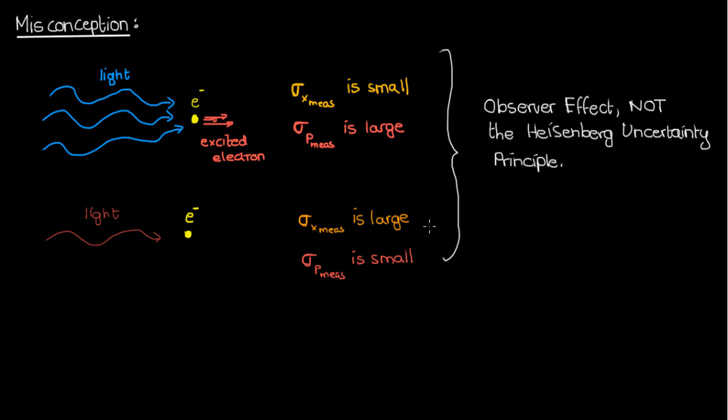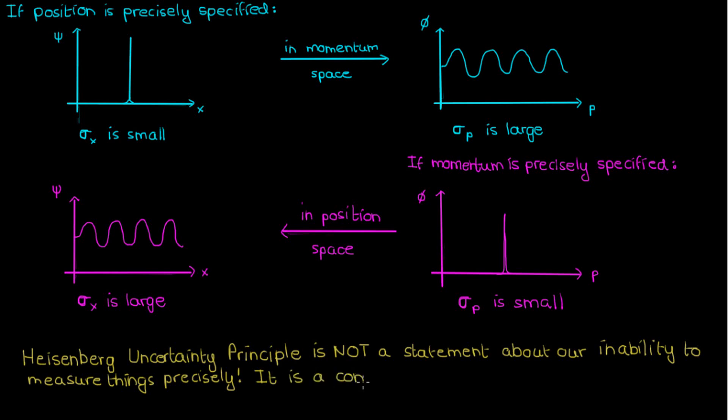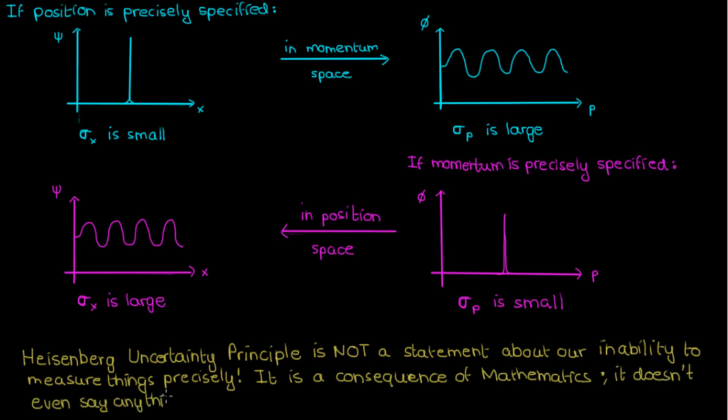The uncertainty principle, as I just mentioned, is a consequence of mathematics. It can be thought of as a consequence of the nature of Fourier transforms, which is a mathematical construct. In fact, the Heisenberg uncertainty principle was derived from the generalized uncertainty principle, so another way to think of it is as a consequence of the generalized uncertainty principle, which was derived purely from mathematics. The Heisenberg uncertainty principle doesn't say anything about observers or observers having to interact with particles — it's a statement on the nature of quantum mechanical particles which arises from mathematics and doesn't even say anything about measurements.